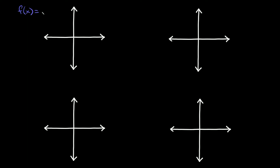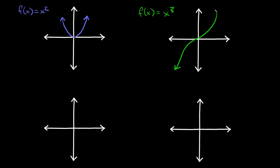The first two you're probably already familiar with are f(x) = x² and f(x) = x³. f(x) = x² is a quadratic, so when you graph it it's just a parabola. And f(x) = x³ is a cubic function, which looks something like an S-curve when you graph it.